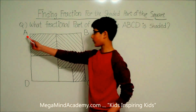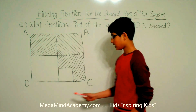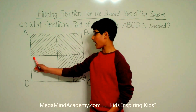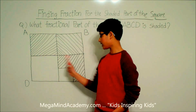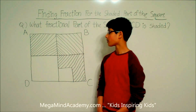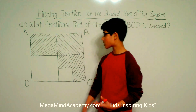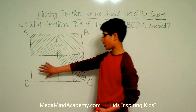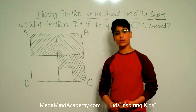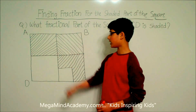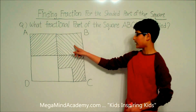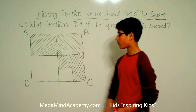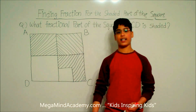We can see that this is square ABCD, and it is divided up into four quadrants by these two lines. Let's name these quadrants as Quadrant A, Quadrant B, Quadrant C, and Quadrant D. Quadrant A is fully shaded, Quadrant B is also fully shaded, Quadrant C is partially shaded, and Quadrant D is not shaded at all.